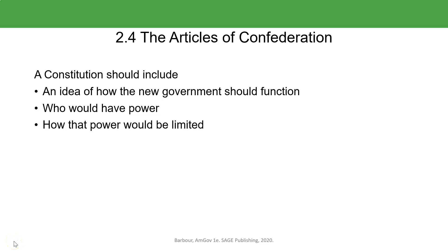As the framers of the Constitution got together, some of the things they had to consider when leaving the Articles of Confederation behind were: how should the new government function under the Constitution? Who would have power? How would you share power between the federal government and the states? And how would you go about limiting powers to make sure that you had equity or equality between the states, whether they were big or small? These were issues they had to contend with early on in the consideration of a new Constitution.